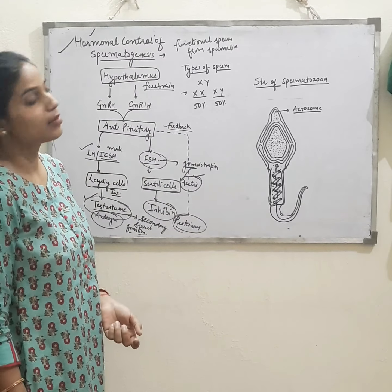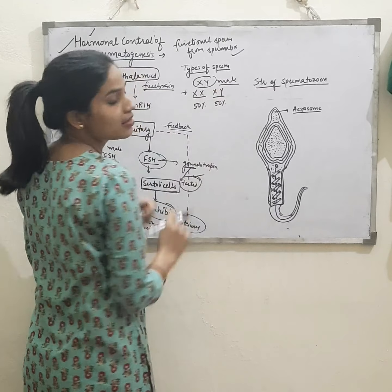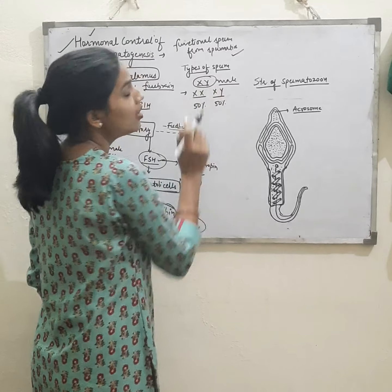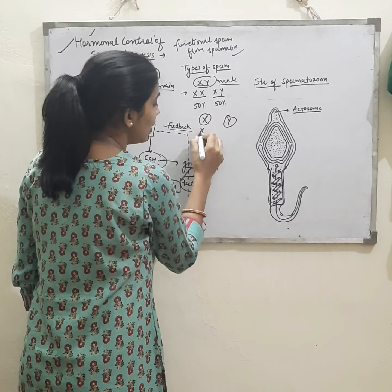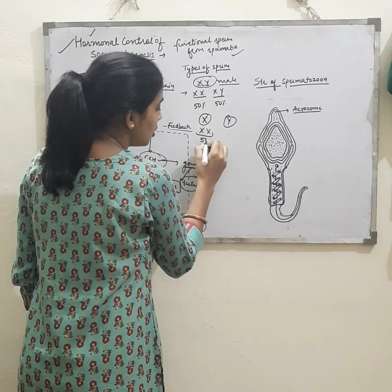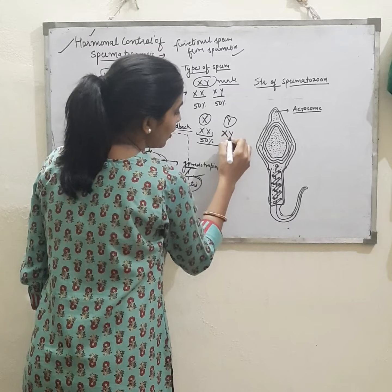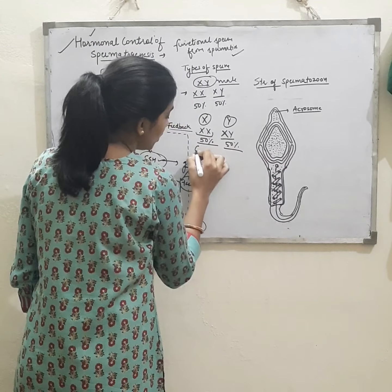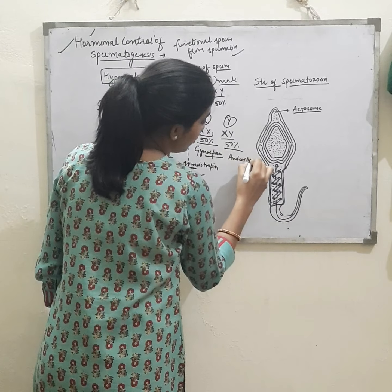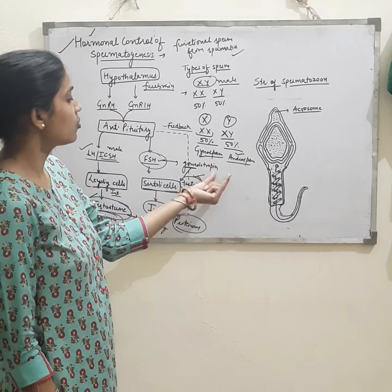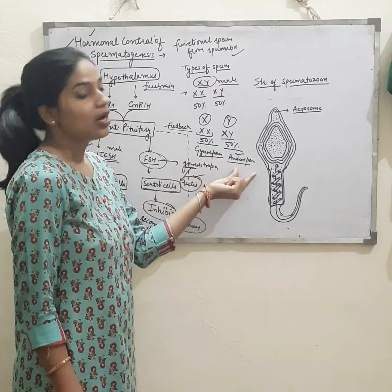This is all about the hormonal control of spermatogenesis. Now, there are two types of sperm. As you know, males contain X and Y chromosomes. At the time of meiosis, when X and Y separate, at the time of fertilization there is a 50% chance of gynosperm formation and a 50% chance of androsperm formation. So these two types of sperm — gynosperm and androsperm — are formed.